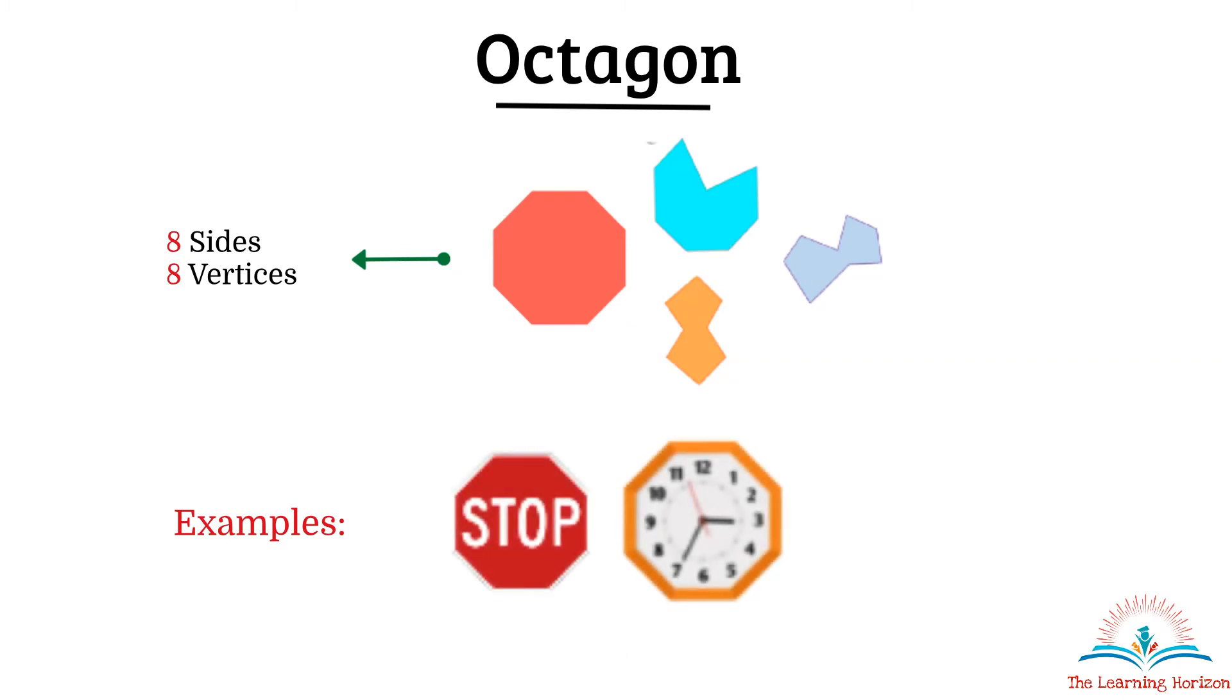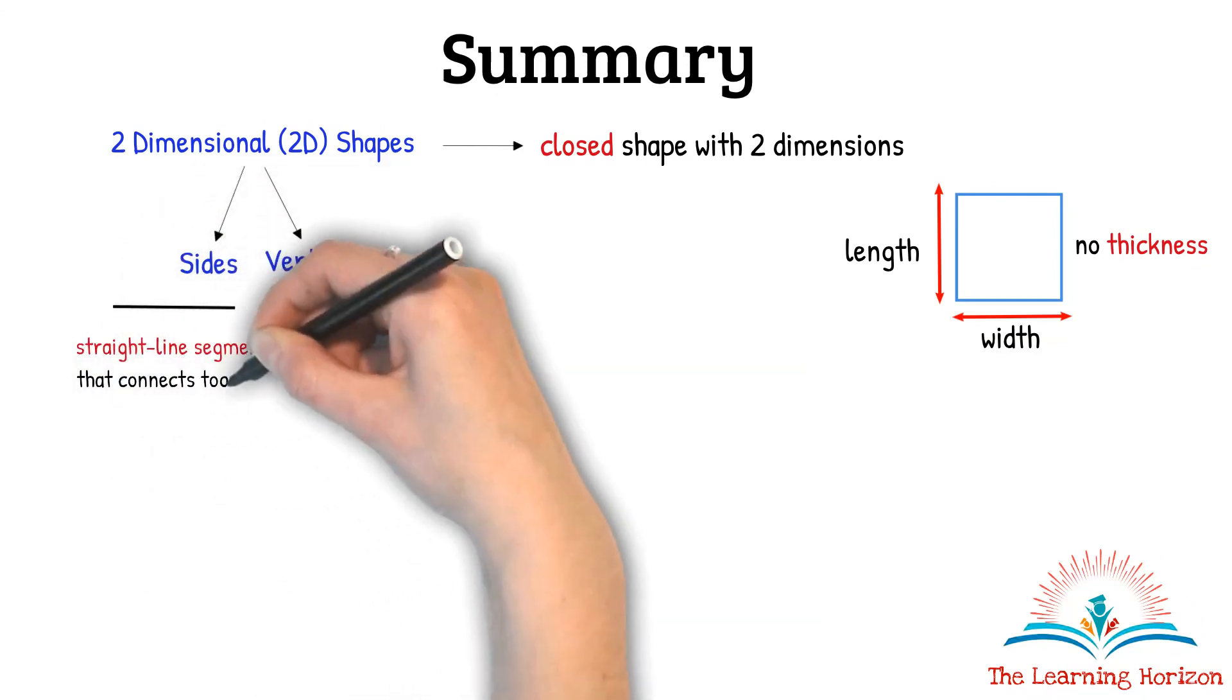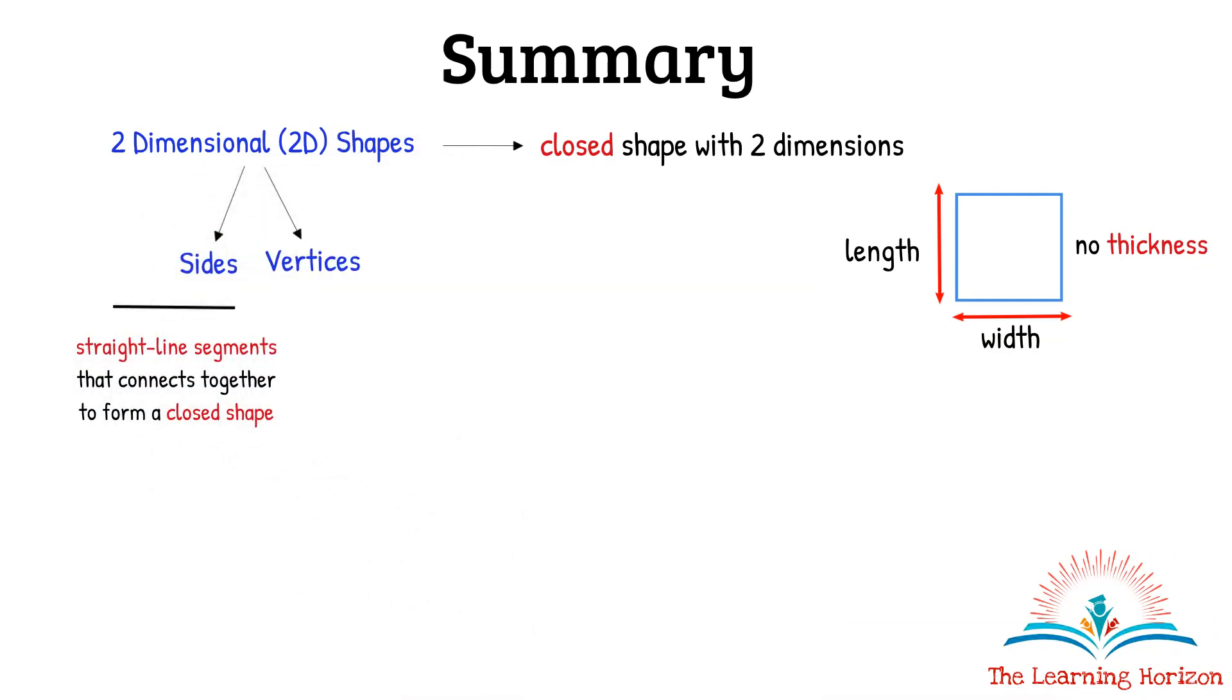To summarize, we learned the definition of a two-dimensional shape. These shapes are closed shapes with only two dimensions, that is length and width. They do not have any thickness. We learned about two basic attributes, that is sides and vertices. A straight line segment that connects together to form a closed shape is called a side. The point or the corner where two sides meet is called a vertex. Two or more vertex together is called vertices. Then we looked into some basic two-dimensional shapes.